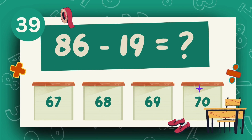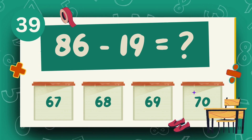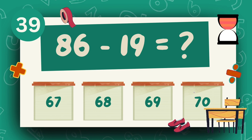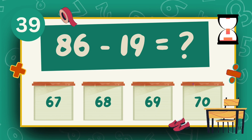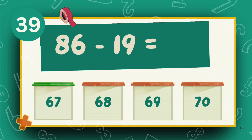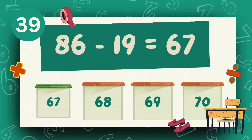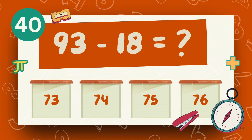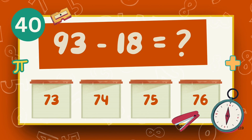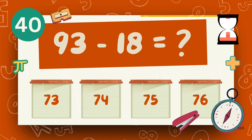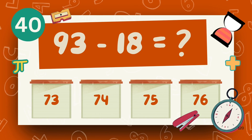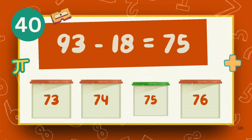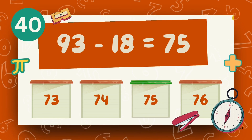What is 86 minus 19? The answer is 67. What is 93 minus 18? The answer is 75.